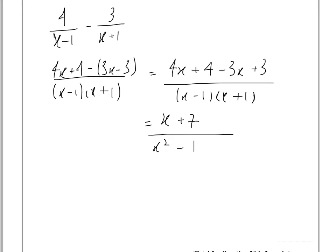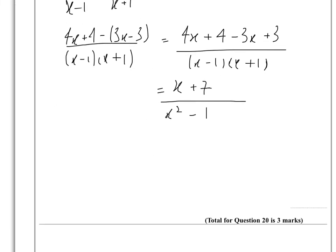And that is the end solution, how you write that as a single fraction. We end up with x plus 7 over x squared minus 1.